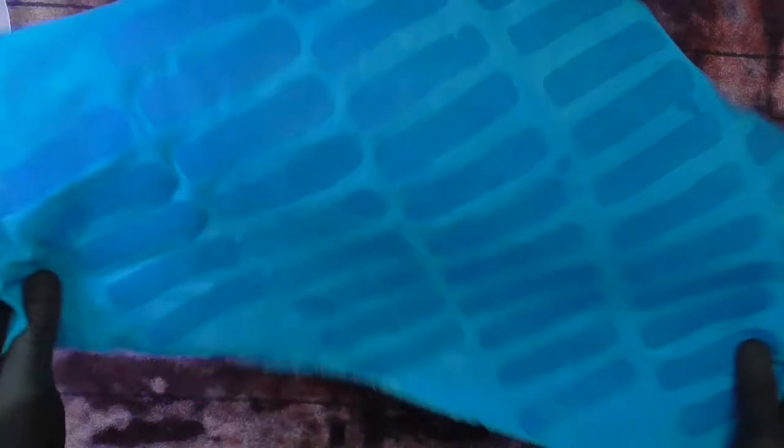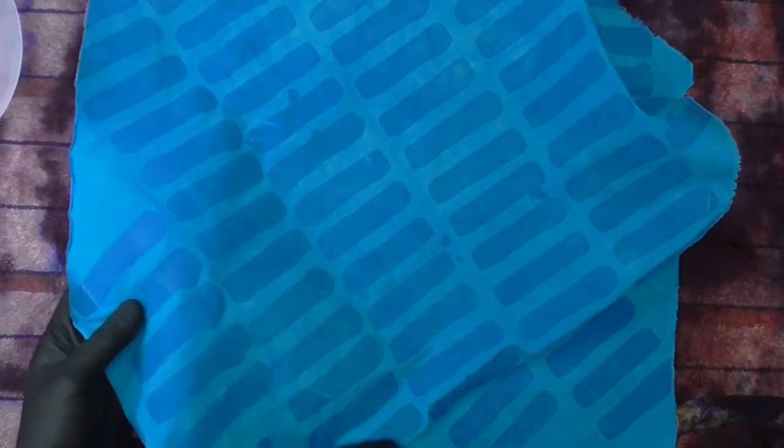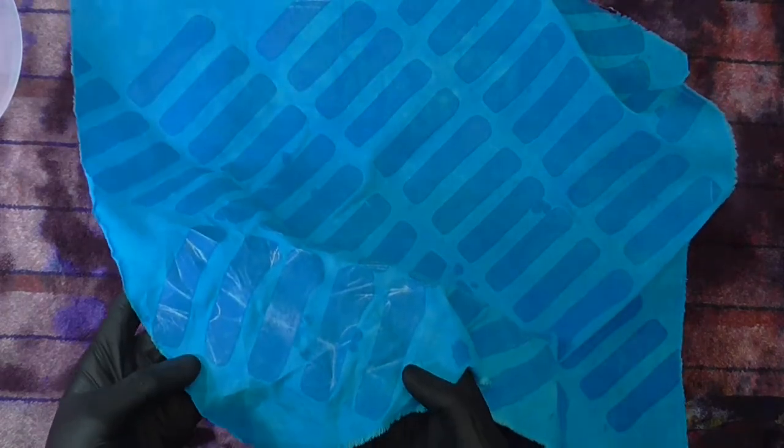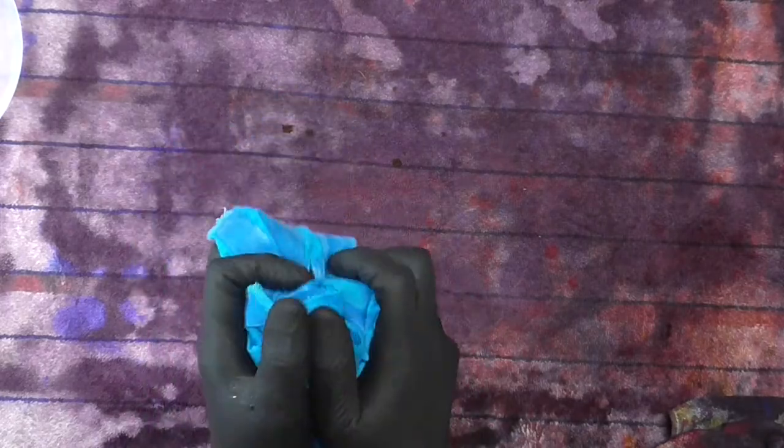For a cracked effect in the wax, all you have to do is crush and scrunch the dry wax as desired. The more you crush, the more cracks you'll get. When you achieve your desired results, simply place it in the dye bath to soak.